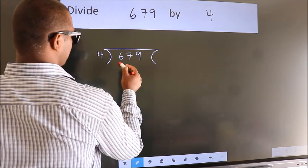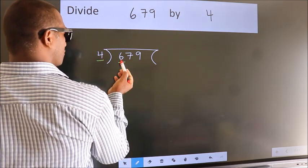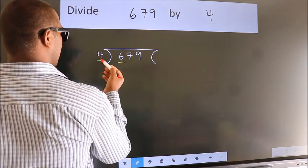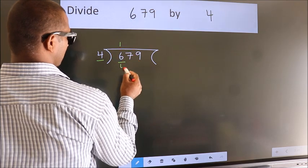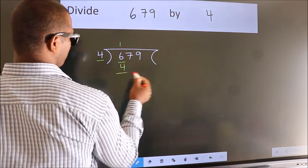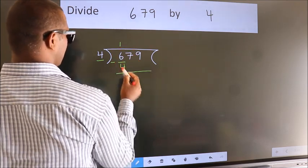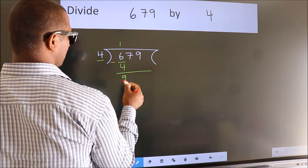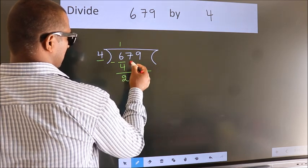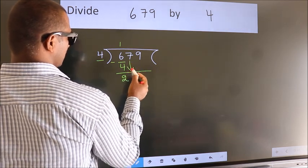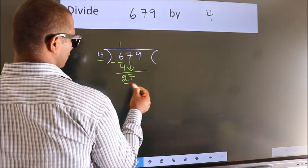Here we have 6, and here 4. A number close to 6 in the 4 times table is 4 once, which is 4. Now we should subtract — we get 2. After this, bring down the beside number. So 7 comes down, giving us 27.